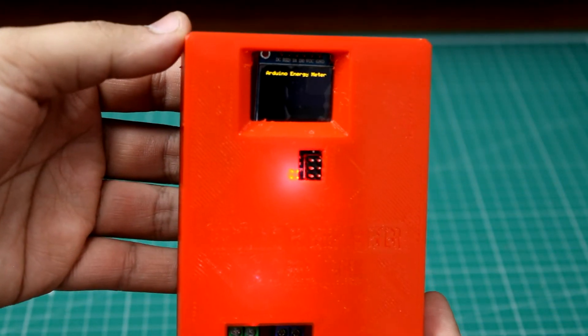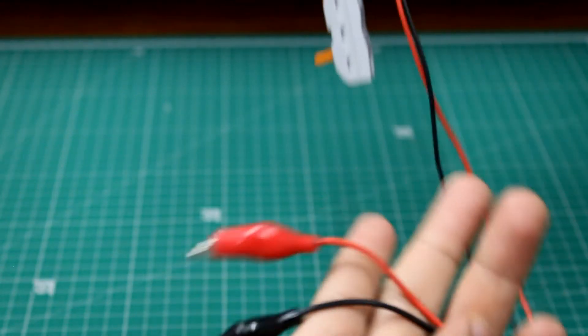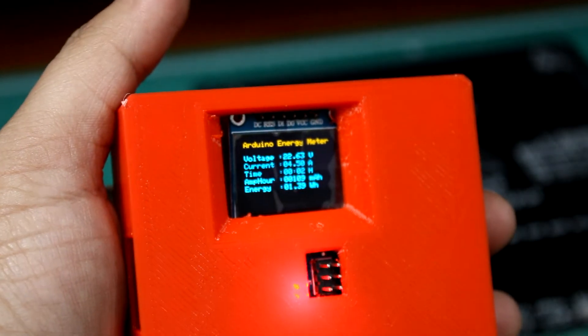To use this device, simply turn on the switch, connect the sensor wires to the device to be measured in series, and voltage wires using the alligator clips in parallel, and you will get the readings on the display.